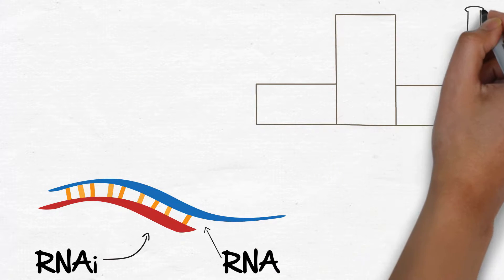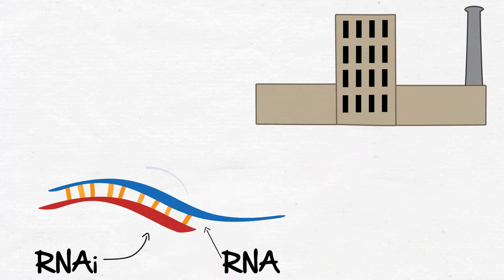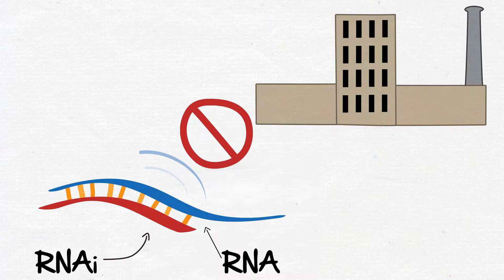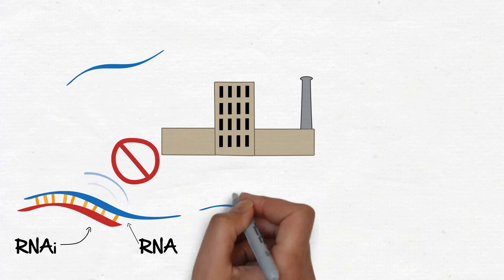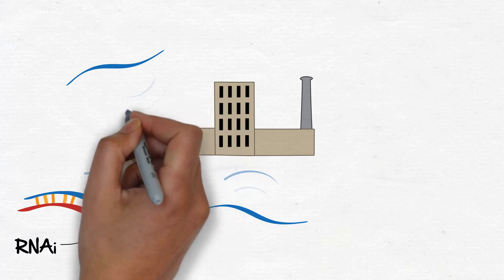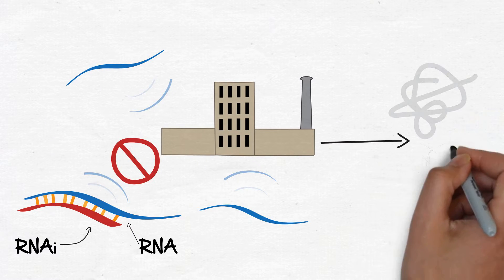Once the interfering RNAs bind to the messenger RNAs, the genetic code can no longer be translated by that cell's protein factories. And so protein production reduces, improving the diseased state.